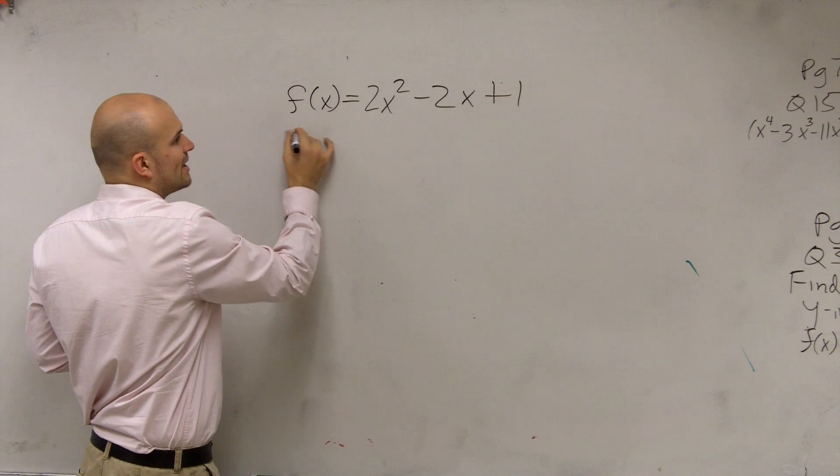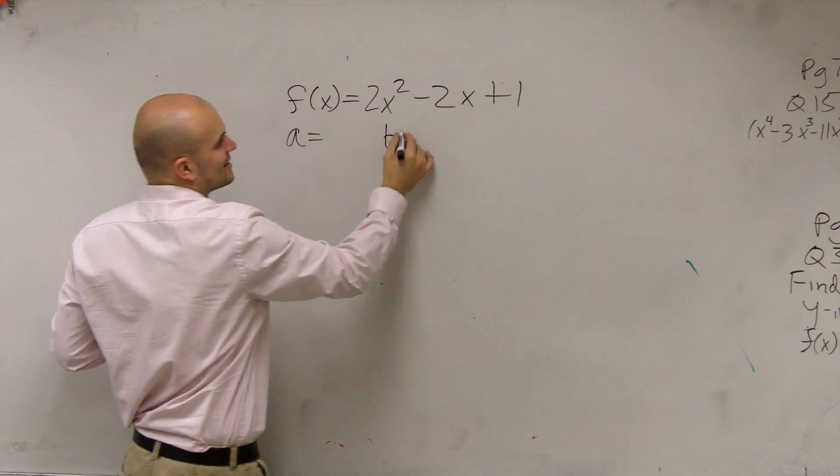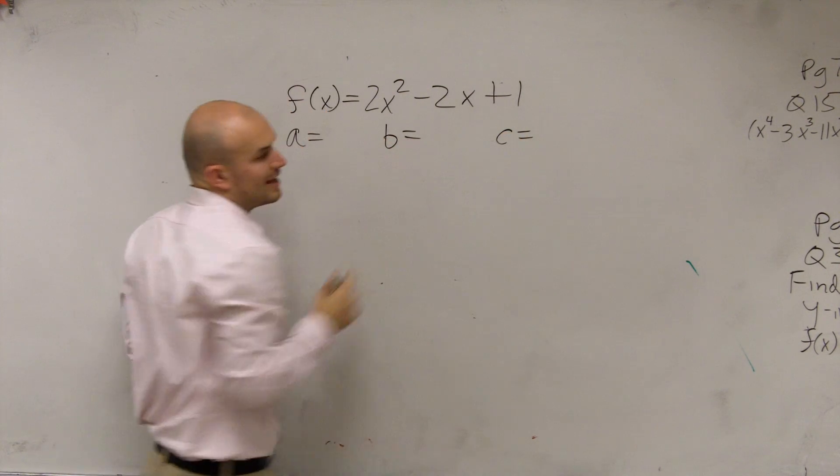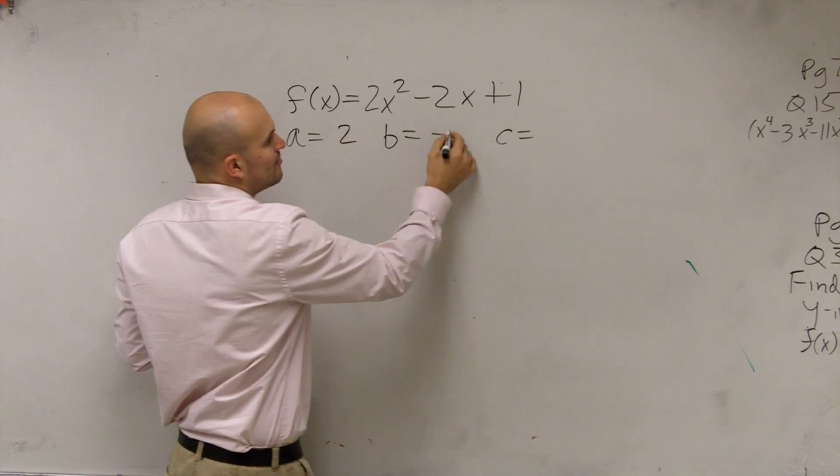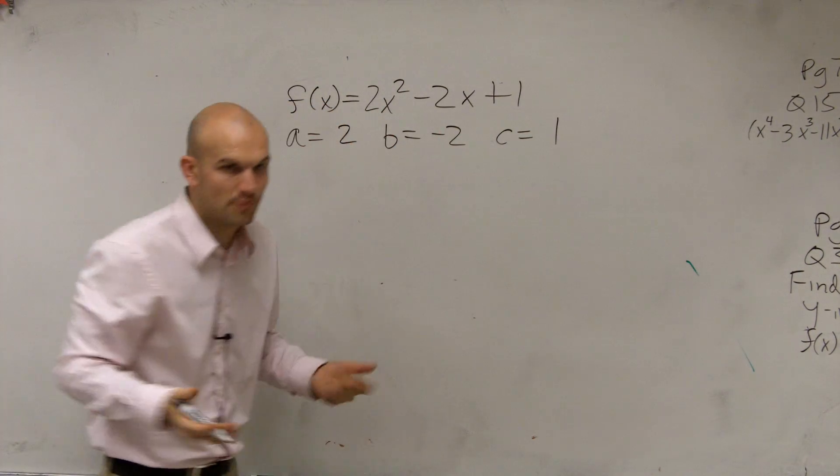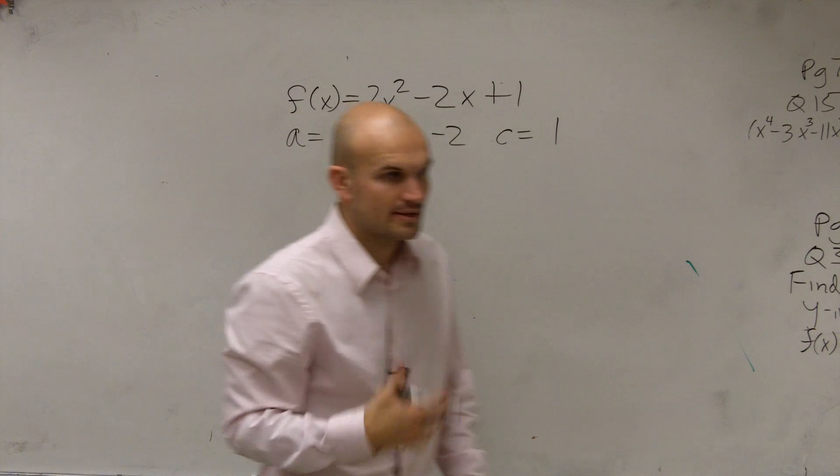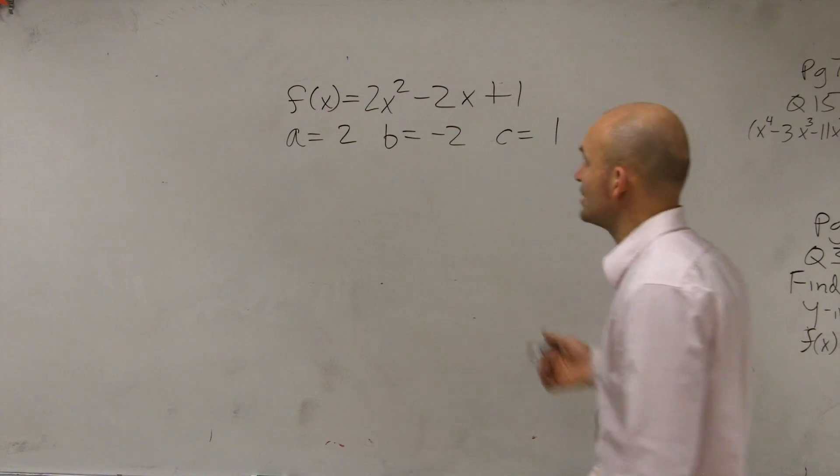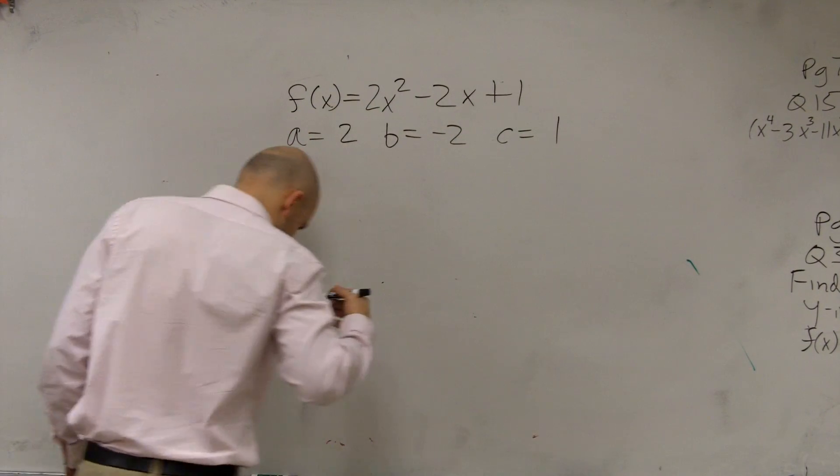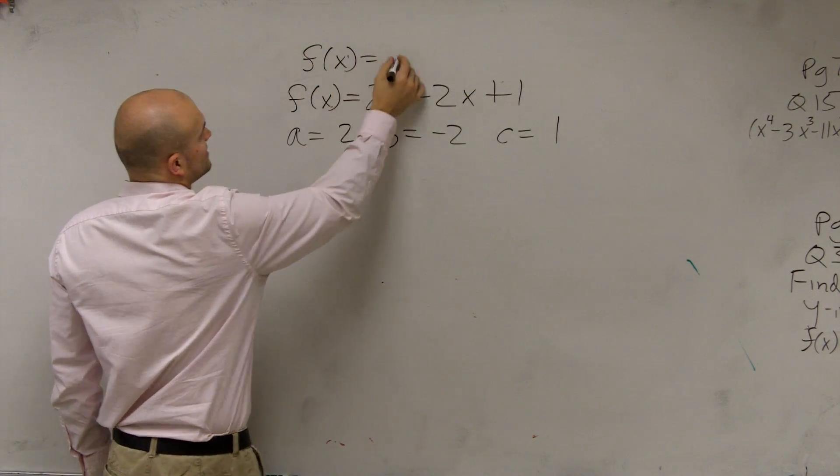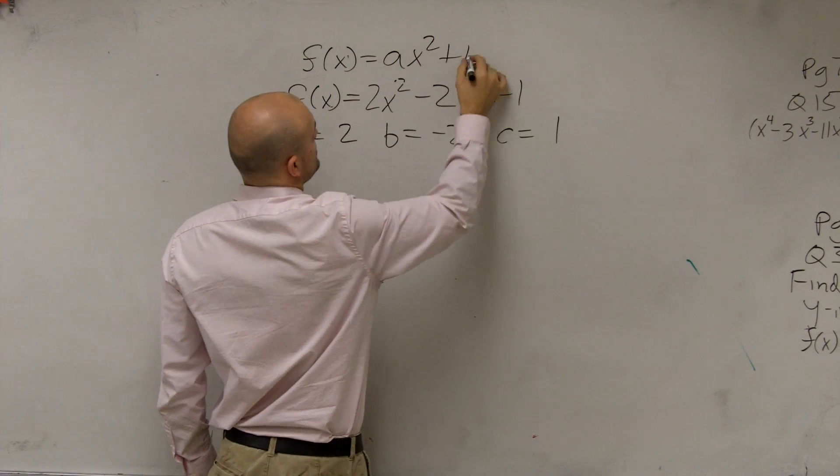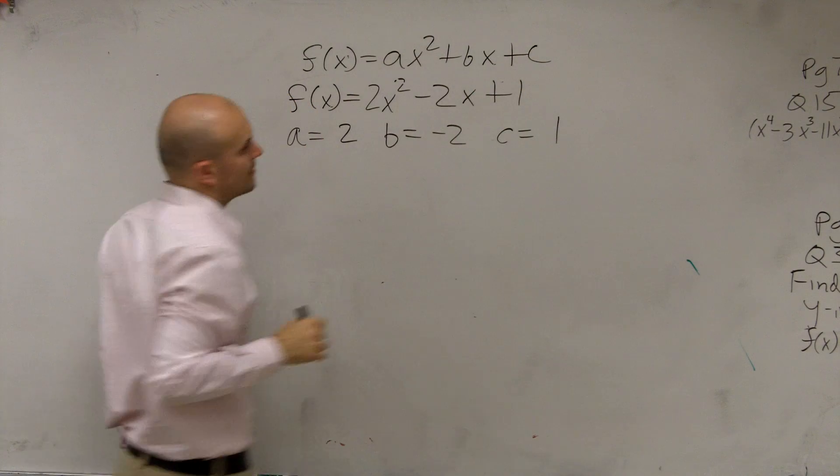The first thing is always, when dealing with the quadratic, is let's label our a, b, and our c. So therefore, a in this problem is going to be 2, b is negative 2, and c is 1, all right? It's the main important thing by dealing with your quadratic, because remember, all quadratic functions can be written in the form of f(x) equals ax squared plus bx plus c.